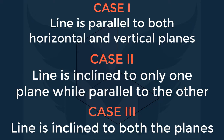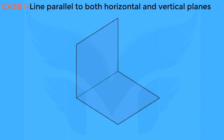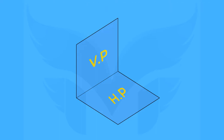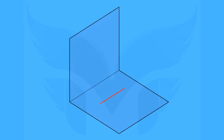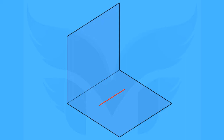So without wasting any time, let's get started. Case number one: line parallel to both horizontal and vertical plane. Here we have a first quadrant with horizontal and vertical planes. Let's imagine a line is placed in the first quadrant in such a way that it is lying on the edge P.